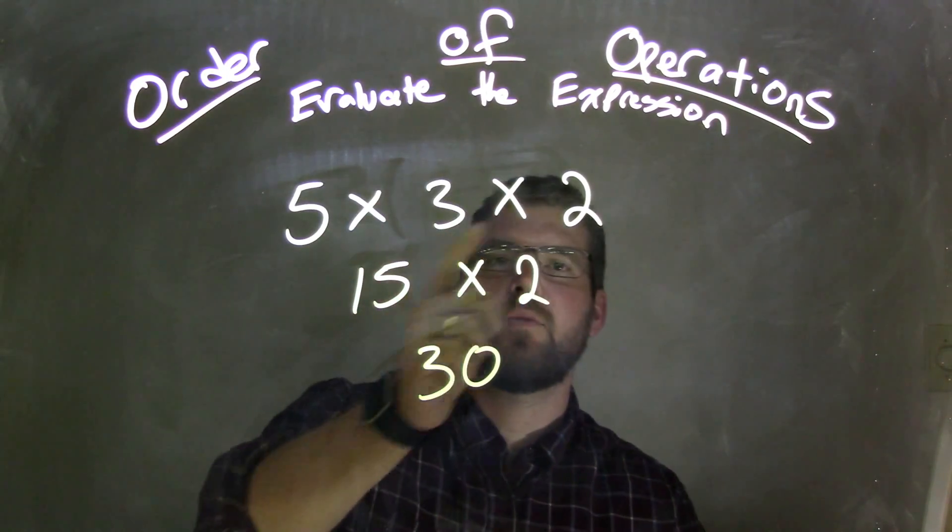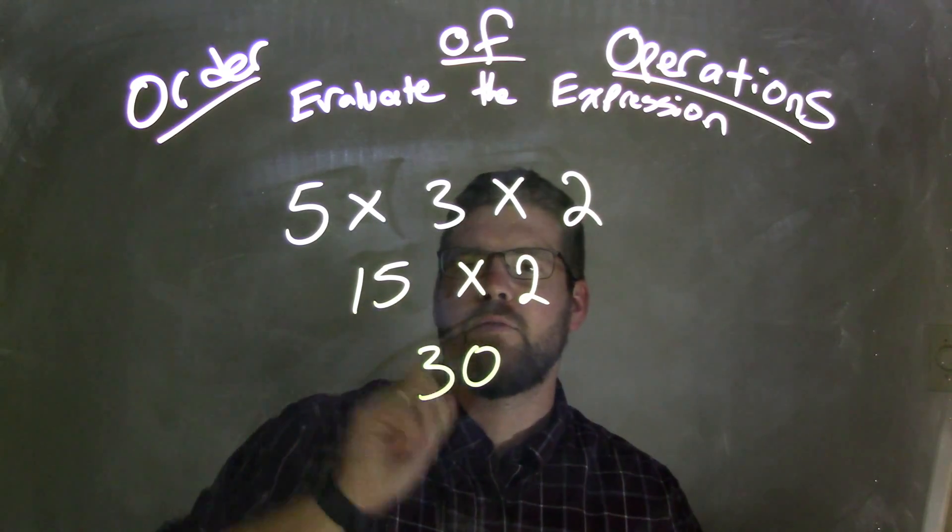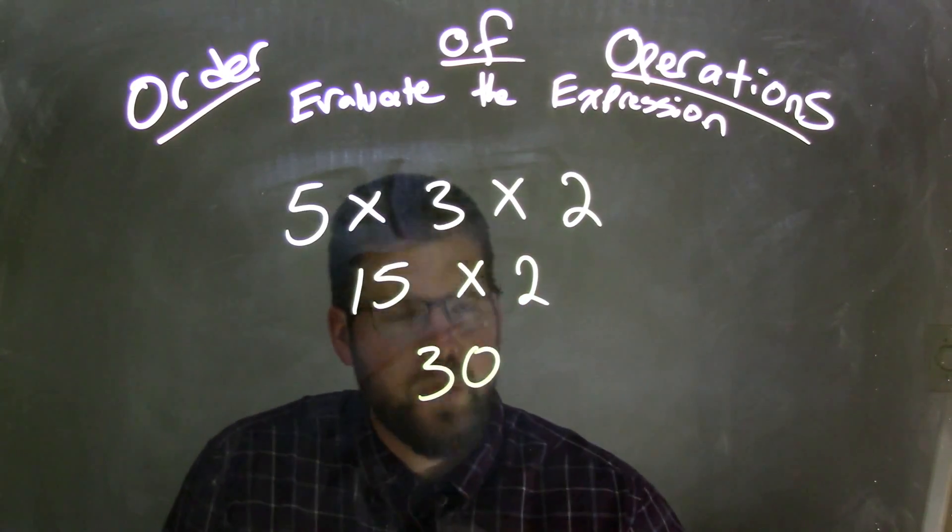So we have 5 times 3 times 2, 5 times 3 is 15, 15 times 2 is 30.